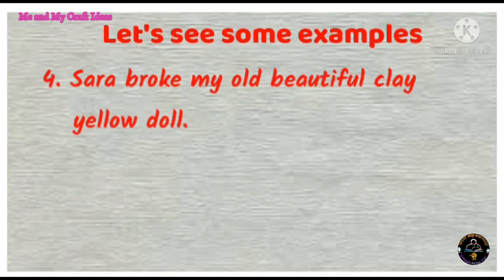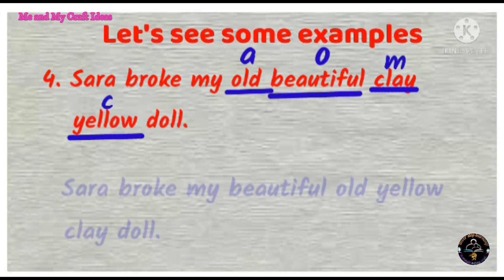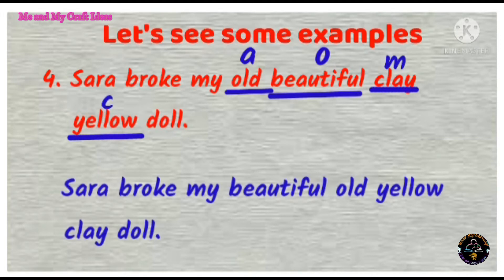Sarah broke my old beautiful clay yellow doll. Here in this sentence, old is age, beautiful is opinion, clay is material, and yellow is color. So the correct adjective order is: Sarah broke my beautiful old yellow clay doll.